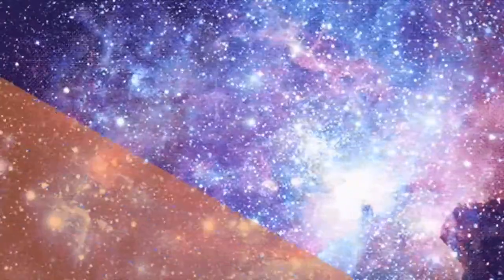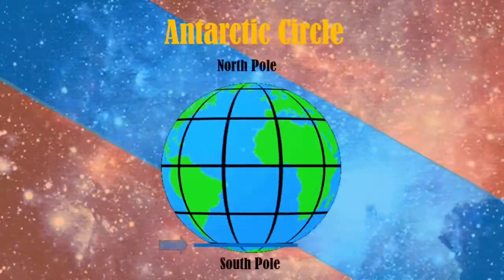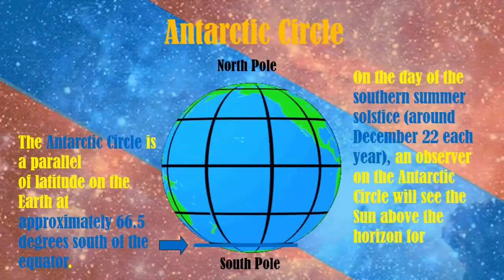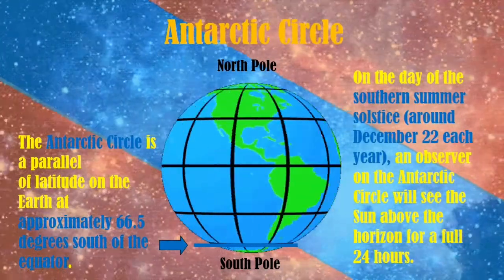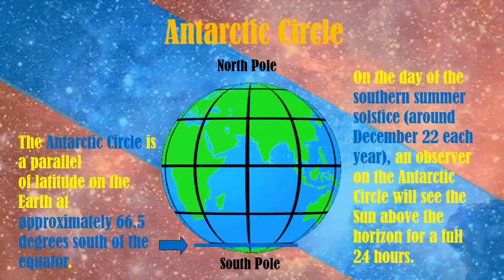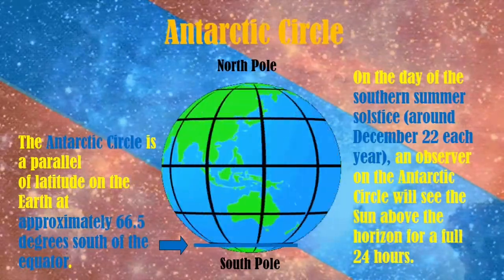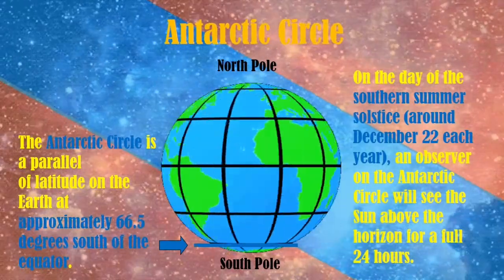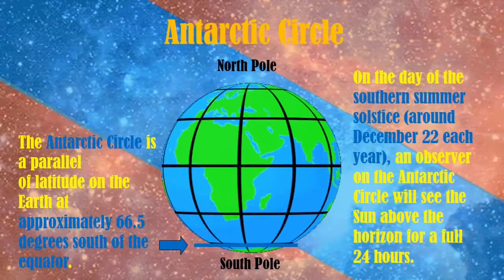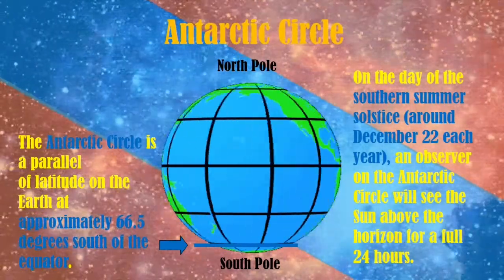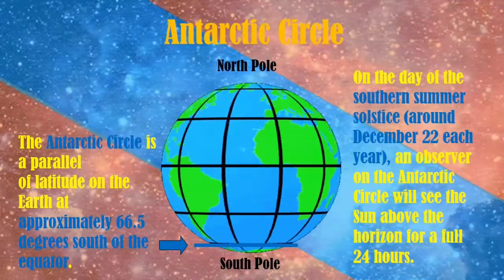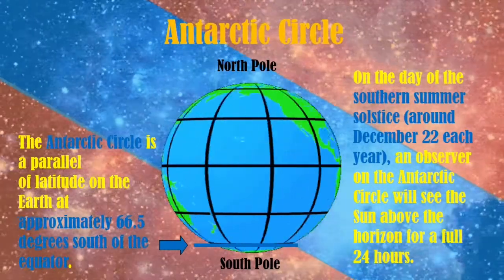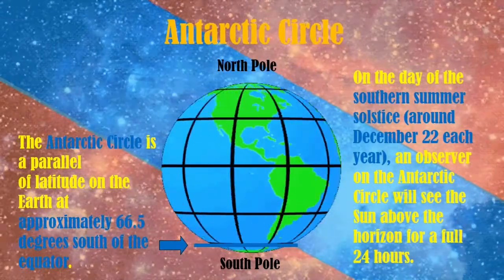Opposite to the Arctic Circle is the Antarctic Circle. This is also a parallel of latitude on the earth at approximately 66.5 degrees south of the equator, as shown on the slide. On the day of the southern summer solstice, around December 22nd of the year, as an observer on the Antarctic Circle, you can see the sun above the horizon for a full 24 hours.